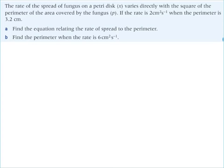I'll share with you the one that was in the textbook. They say the rate of the spread of fungus on a petri dish, X, varies directly with the square of the perimeter of the area covered by the fungus. P is the perimeter. If the rate is two centimeters squared per second when the perimeter is 3.2, find the equation relating the rate of the spread to the perimeter.